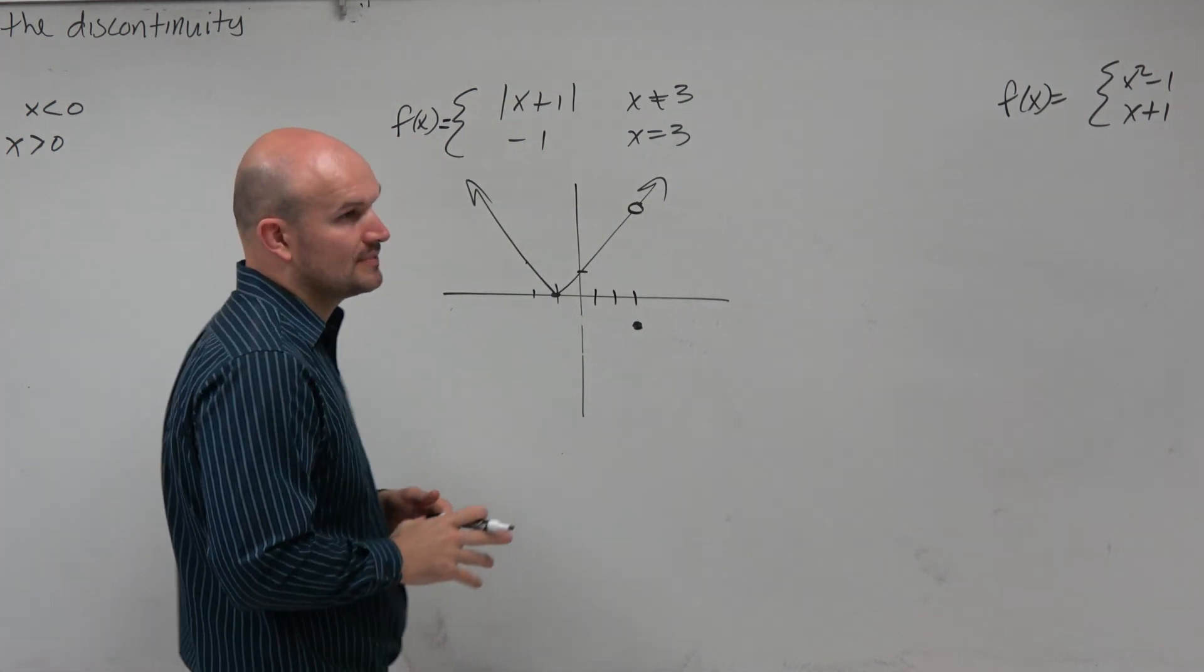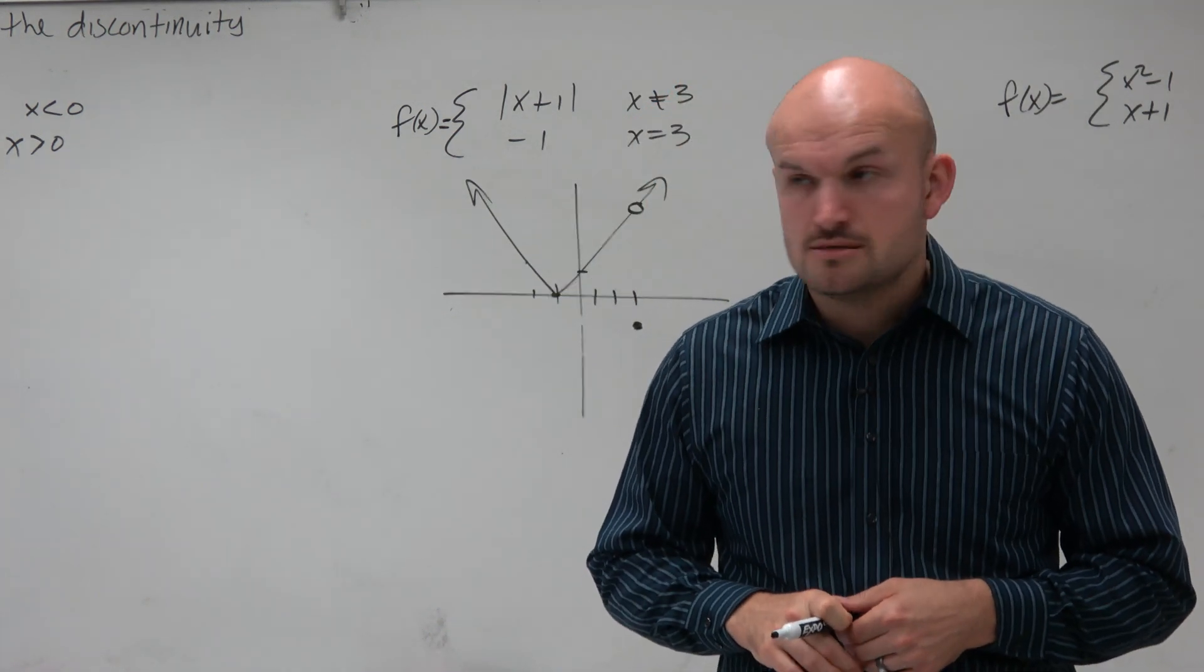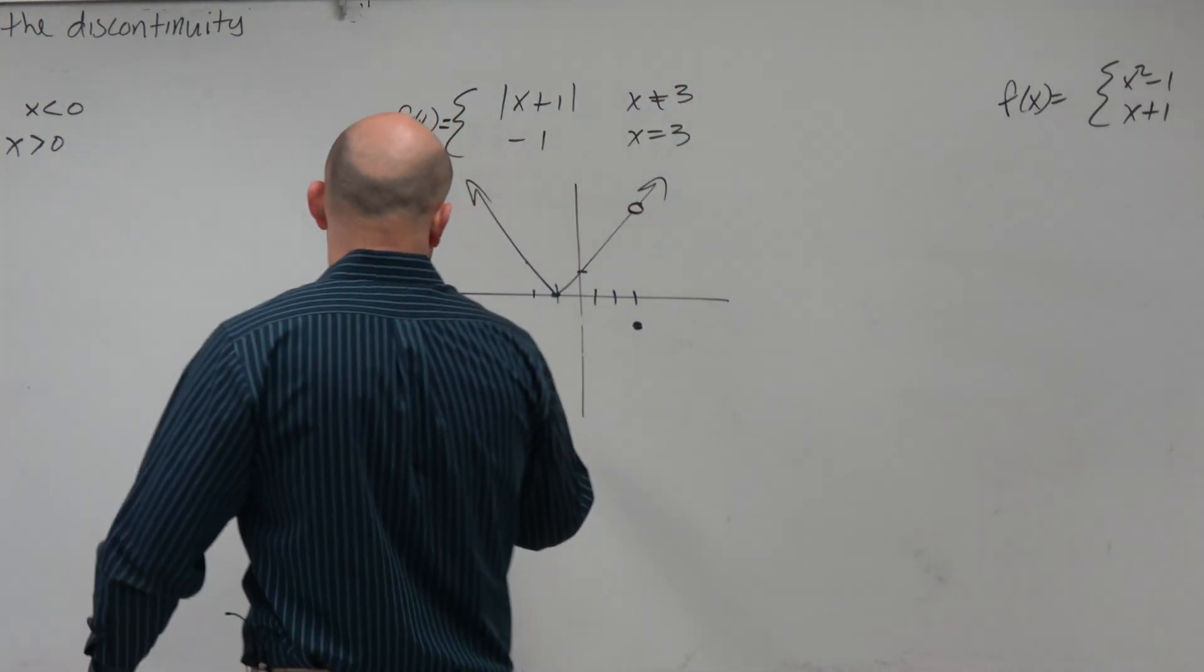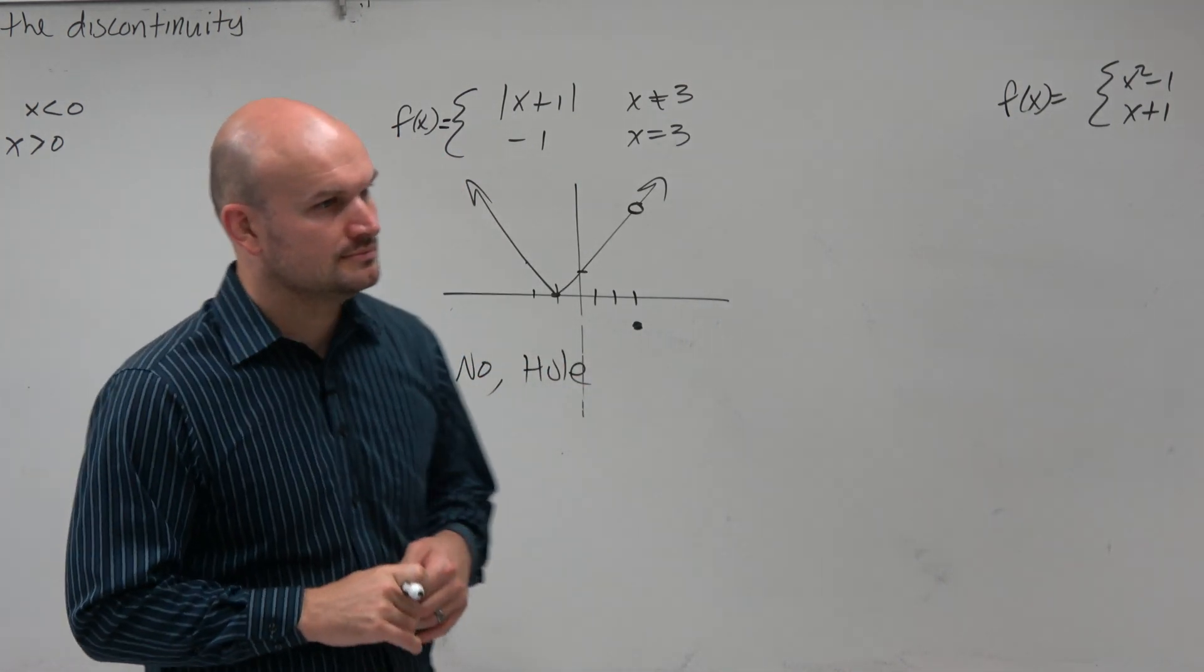So that is what our graph looks like. Then we ask ourselves the question, is that graph continuous or not? No. So we say no, and therefore describe the continuity. We say that it is a hole.